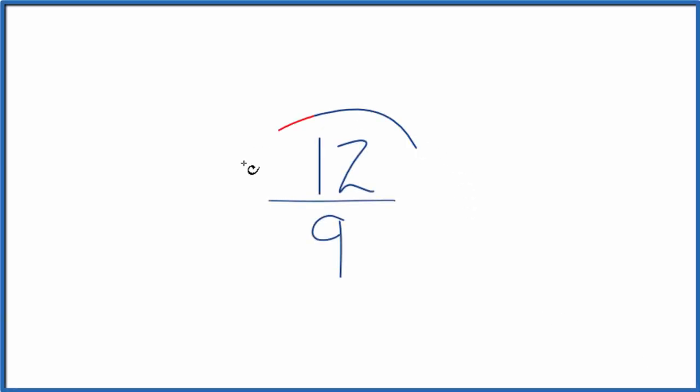Let's simplify the fraction 12 ninths. We want to find another fraction that's equivalent, has the same value as 12 over 9, just simplified or reduced to its lowest terms.